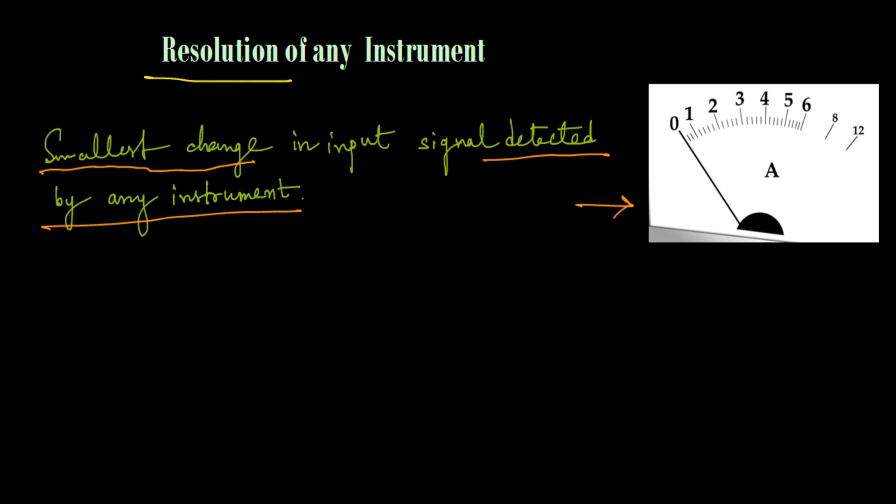Suppose this particular ammeter is connected in a circuit like this in series, and the initial current through this circuit is 3 ampere. The ammeter pointer will show at 3 ampere reading here. Any two measurements, that is 1 to 2 or 2 to 3, are divided into 5 equal divisions.